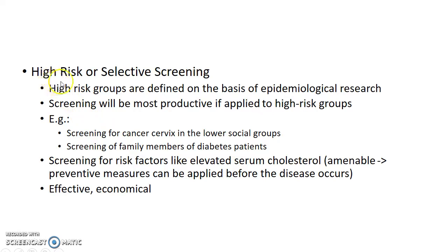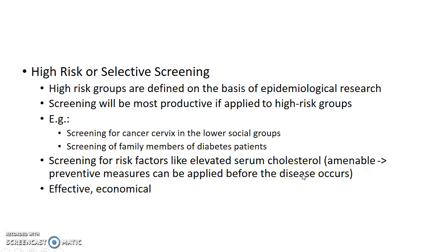High risk groups are defined on the basis of epidemiological research. Screening will be most productive if it is applied to high risk groups. For example, screening for cancer cervix in the lower social groups and screening of family members of diabetes patients. Screening can also be done for risk factors like elevated serum cholesterol, because serum cholesterol is amenable and so preventive measures can be applied before the disease occurs. High risk or selective screening is effective and economical.